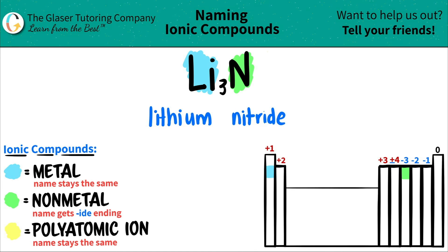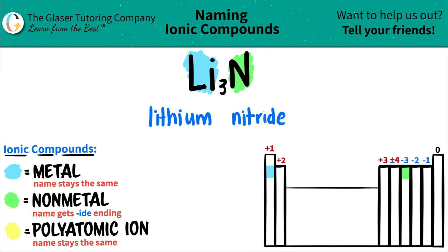Now you ask yourself: since it's ionic, do I need a Roman numeral? But since lithium is not a transition metal — it's only in group one — you do not need a Roman numeral. So you are done. Li3N is lithium nitride.